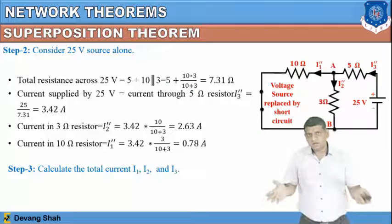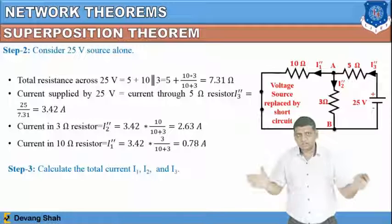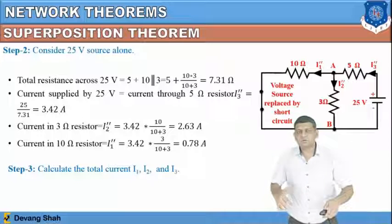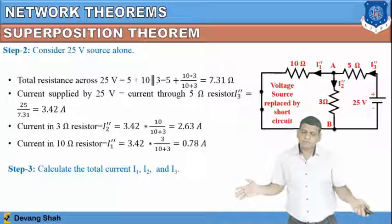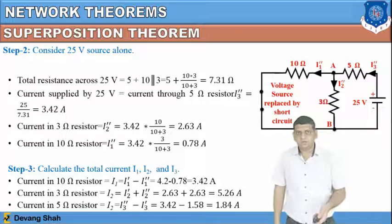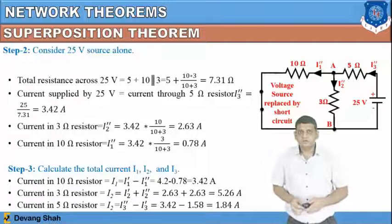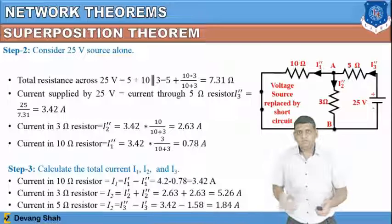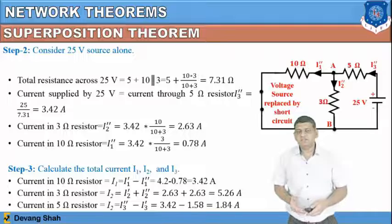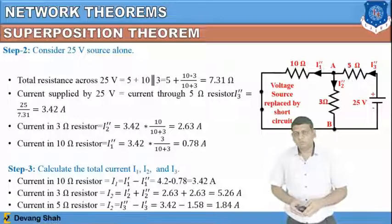Using the current divider rule for step 2: i2'' = 3.42 × 10 / (10 + 3) = 2.63 A, and i1'' through the 10 ohm resistance is 0.78 A. Combining both effects: i1 = 4.2 − 0.78 = 3.42 A (opposite directions), the current through 3 ohm = 2.63 + 2.63 = 5.26 A (same direction), and current through 5 ohm = 1.84 A (opposite directions).